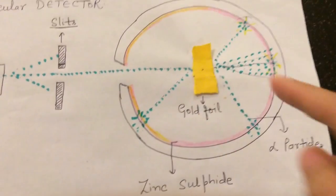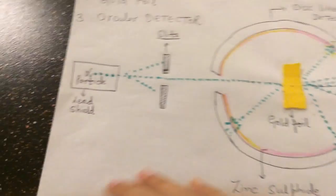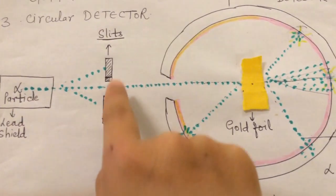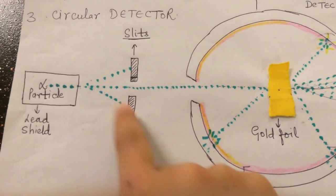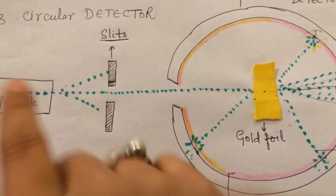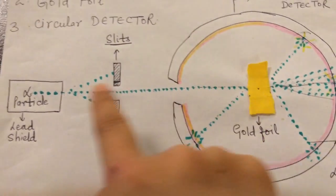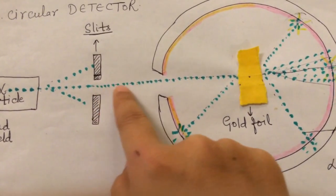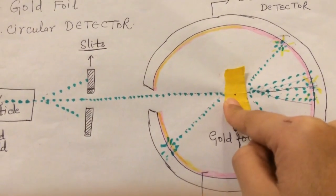By observing which areas glow, we can know where the alpha particles end up after striking the gold foil. In this experiment, alpha particles were passed through slits. The slits are used to streamline the alpha particles, because before the slits the alpha particles are moving in different directions, so the slits focus them into a straight beam.